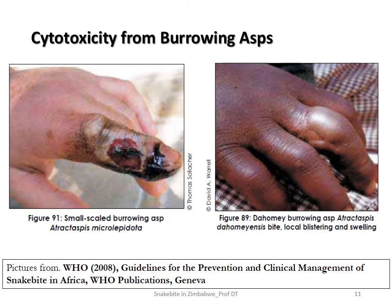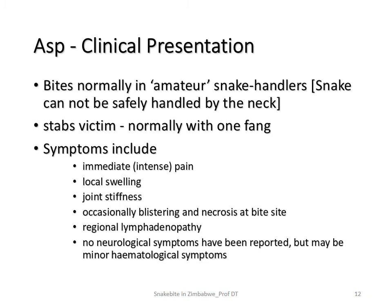Burrowing asp bites frequently occur in amateur snake handlers who are unaware that it is not possible to safely hold this snake by the neck. Most victims exhibit only one fang mark because the snake thrusts itself sideways and jabs. Symptoms include immediate intense pain, local swelling, joint stiffness, occasional blistering, necrosis at the bite site, regional lymphadenopathy, and minor bleeding tendencies. No neurological symptoms have been reported.